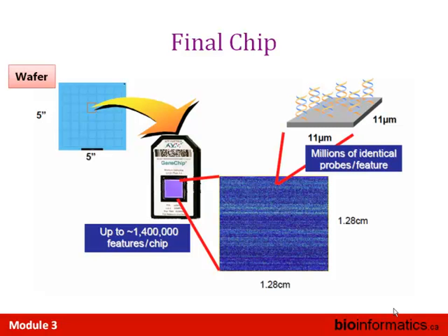On older arrays spots are 11×11 microns; newer ones are about 9×9. They contain millions of identical features — newer Affymetrix arrays about 1 to 2 million, with density determined by the wavelength of light. The arrays have clear patterns with consistent lines — some are experimental artifacts, while others are placed intentionally by the manufacturer to help the software distinguish one 11-micron spot from another.